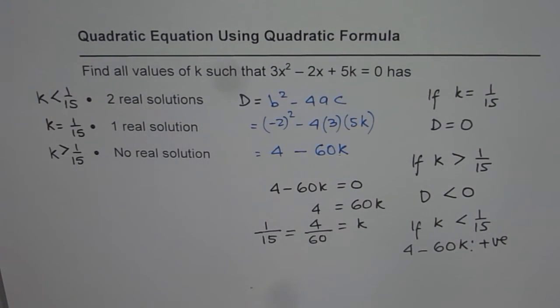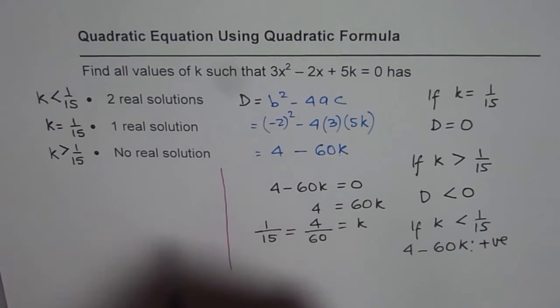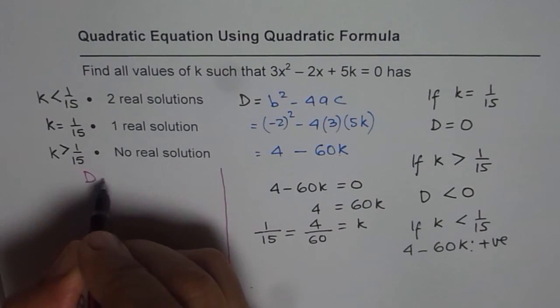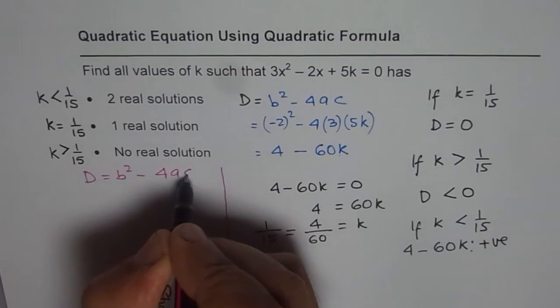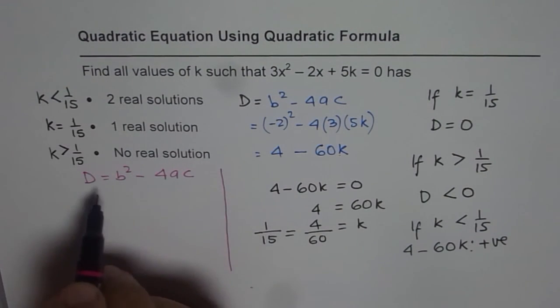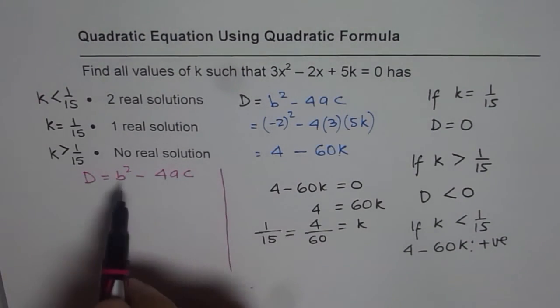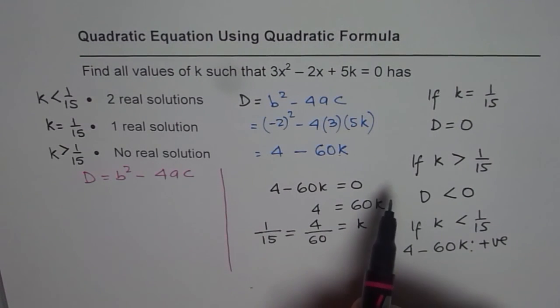So to summarize, in such a question, what should we find? In such a question, find the value of d, which is b² - 4ac. Once you find the value of d, you have to equate this for different conditions.